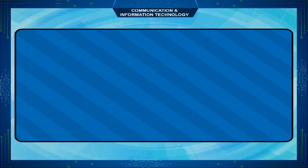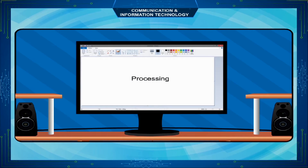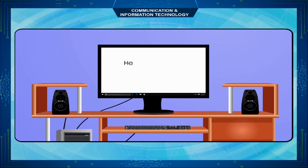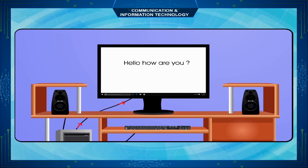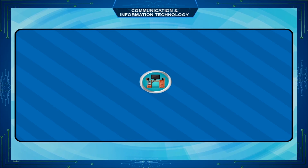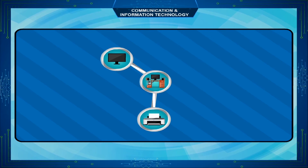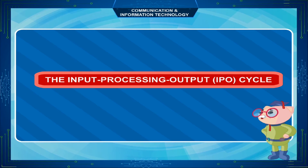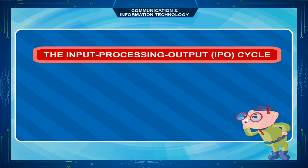Output. Output is the meaningful information — called result — that we receive after processing of data by the computer. We get the output through the output devices like monitor, printer, and speakers.